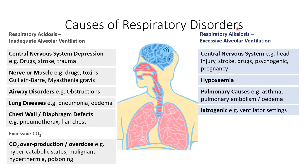Respiratory alkalosis, on the other hand, is due to excessive alveolar ventilation or hyperventilation. This can be due to central nervous system issues such as head injury, stroke, psychogenic causes, and pregnancy. Hypoxemia can cause a patient to hyperventilate. Other pulmonary causes such as asthma, pulmonary embolism, and edema can also increase ventilation. Finally, it could be iatrogenic, for example due to ventilator settings.